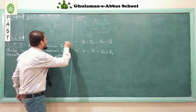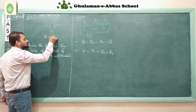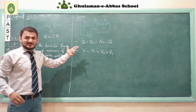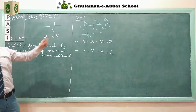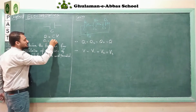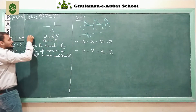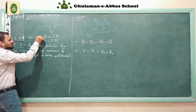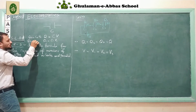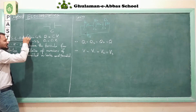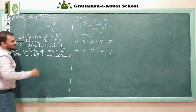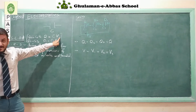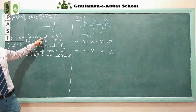We know that Q equals CV, which is the formula from the previous lecture. For capacitor C1: Q1 equals C1 times V1. For C2: Q2 equals C2 times V2. For C3: Q3 equals C3 times V3. Rearranging, V equals Q divided by C. So similarly, V1 equals Q1 over C1, V2 equals Q2 over C2, and V3 equals Q3 over C3.